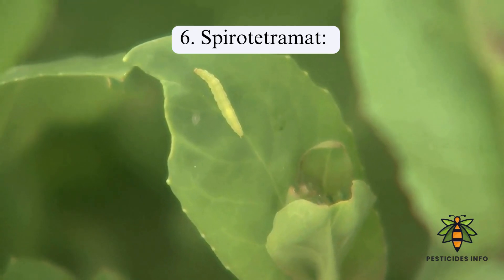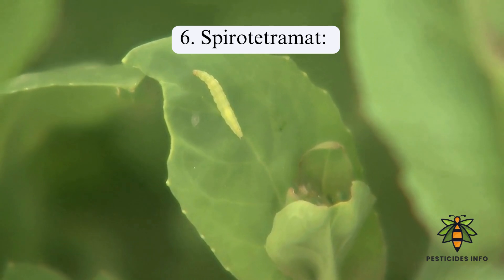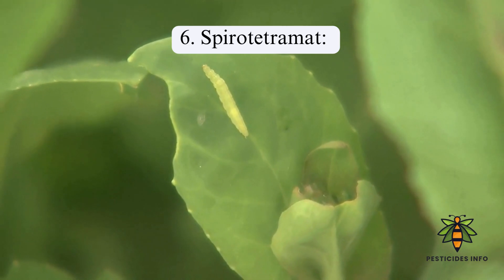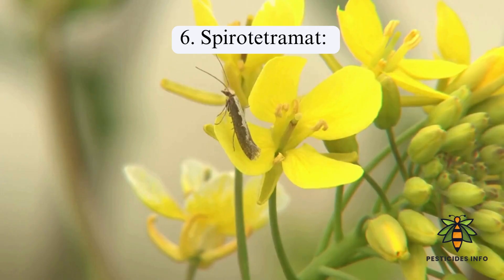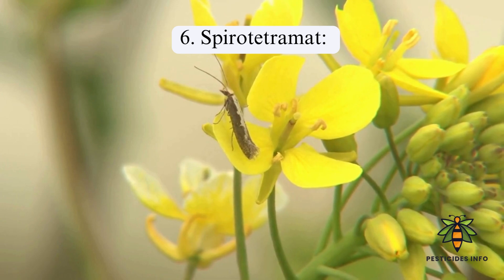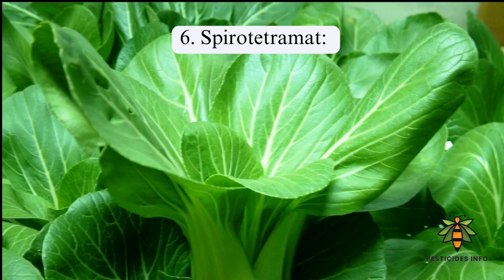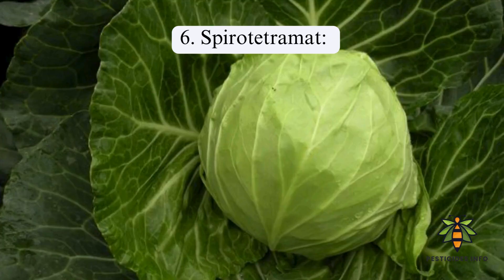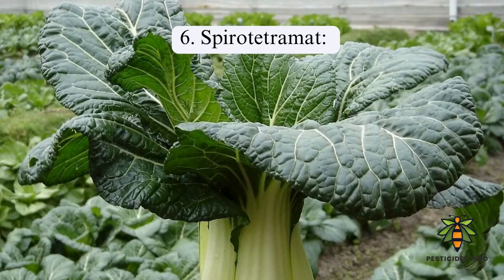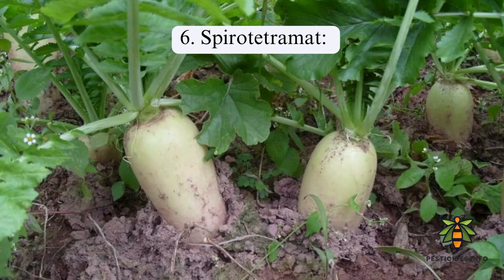Spirotetramat: A tetramic acid derivative, spirotetramat is a systemic insecticide that affects lipid biosynthesis. It provides effective control by inhibiting the development of larvae and reducing reproduction in adult moths.